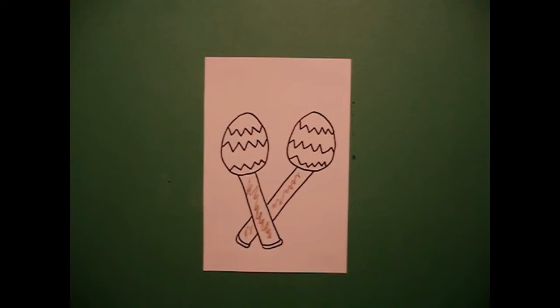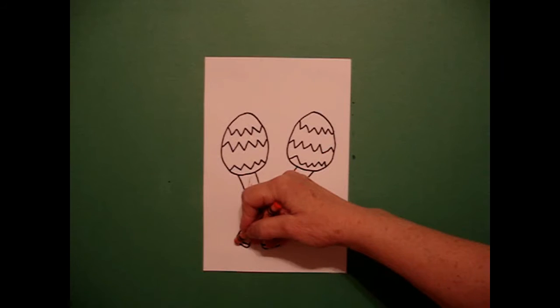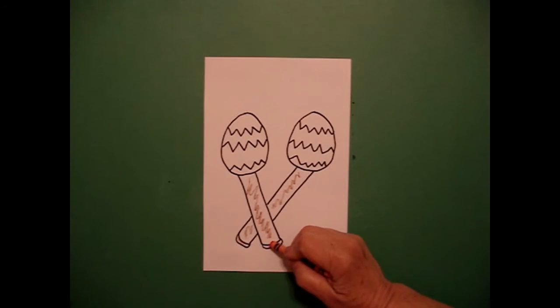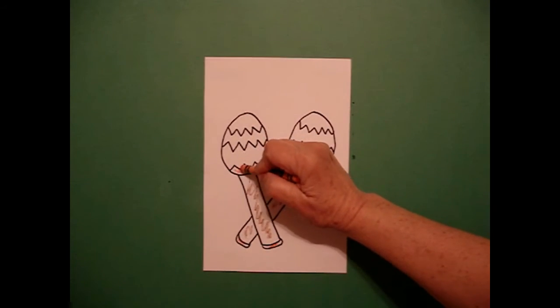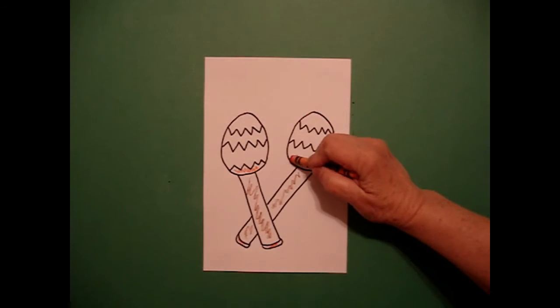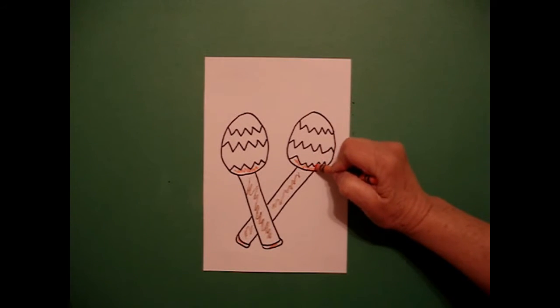Then I'm going to come in with my orange and color the bottom space down here orange. I'm going to color this zig-zag space orange on both the right and the left.